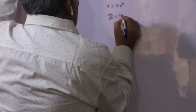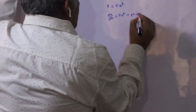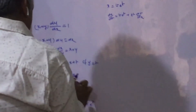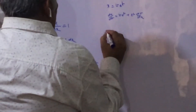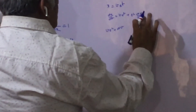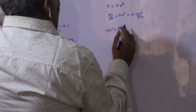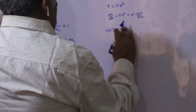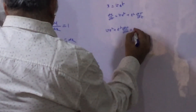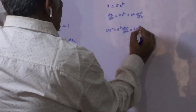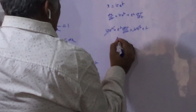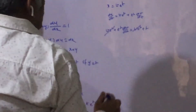We get dx/dt = v·e^t + e^t · dv/dt. Putting this in the given equation, we get v·e^t + e^t · dv/dt = v·e^t + t. This cancels, and we are left with e^t · dv/dt = t.